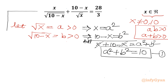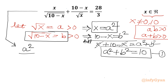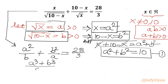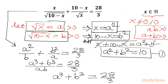Now considering the original equation with the substitution: x is a squared and root(10 minus x) is b, so the first term becomes a squared over b. And 10 minus x is b squared and root x is a, so the second term is b squared over a. Taking LCM, we get a cubed plus b cubed divided by ab equals 28 over 3, or a cubed plus b cubed equals (28/3)ab. Call this equation number 2.